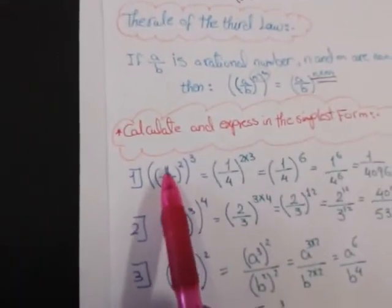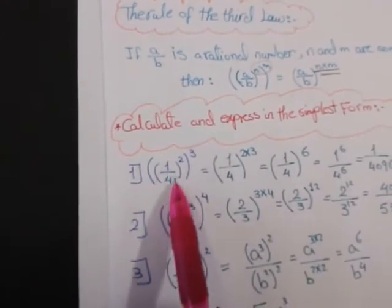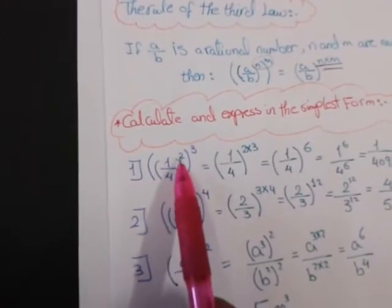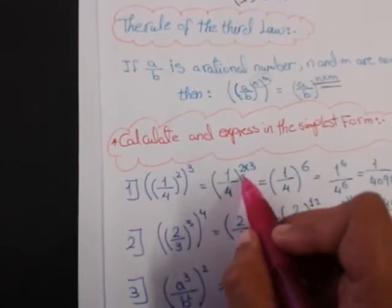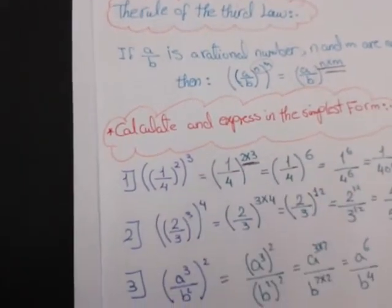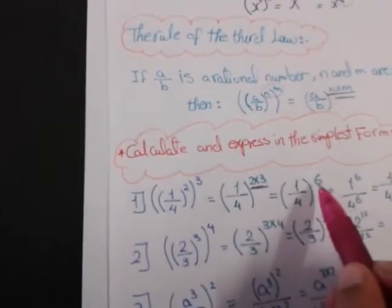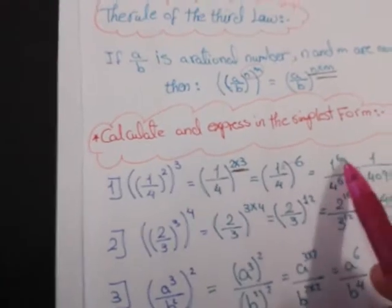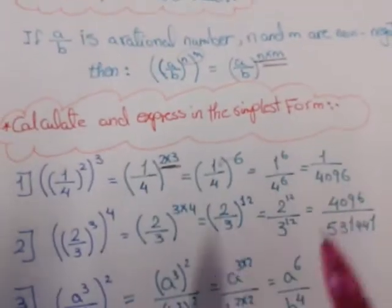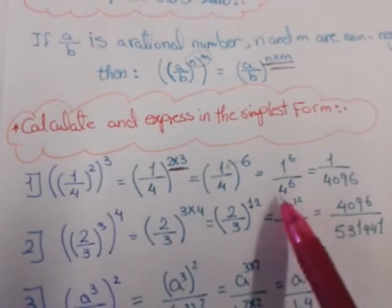Example 1: the fraction 1 over 4, all to the power 2, all to the power 3. I will multiply the powers: 2 times 3 gives me 6. Then I distribute the power 6 to the numerator and denominator: 1 power 6 equals 1, and 4 power 6 equals 4096.